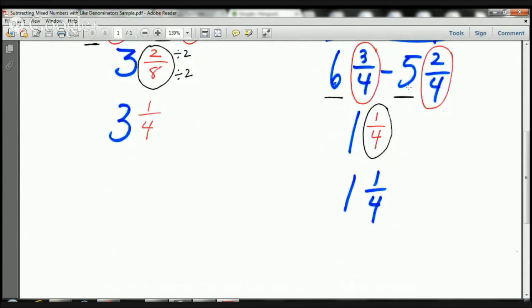And then, because I have the same denominator, I can bring that down. And that's wonderful when it's the same denominator. So I can bring down the 4. And 3 minus 2 is 1. So here I have 1 and 1 4th. And I have this circled because I always have to ask myself, Can I reduce it? Is it possible to make this smaller? And in this case, the answer is no.